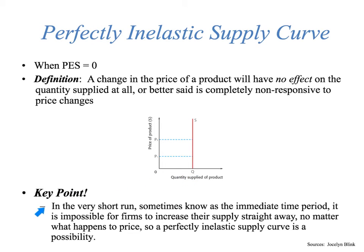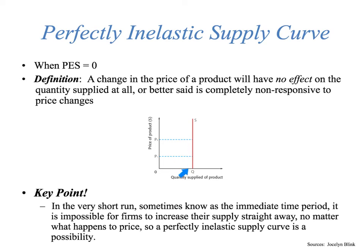In the short run, sometimes called the immediate period, it is impossible for firms to increase supply straight away, no matter what happens to price. The mining example is a useful one. Here in Chile, copper is the backbone of the economy. If all mines were operating at maximum capacity and the price of copper suddenly went way up, it would be pretty impossible in the immediate short run for a mining company to just start extracting more copper. You'd have to invest millions or even a billion dollars, and it could take six, eight, ten, or twelve months to respond — by which time the price could drop. So a perfectly inelastic supply curve is a real possibility.